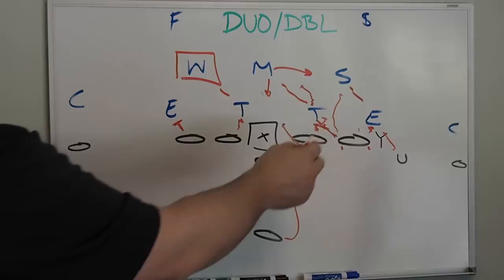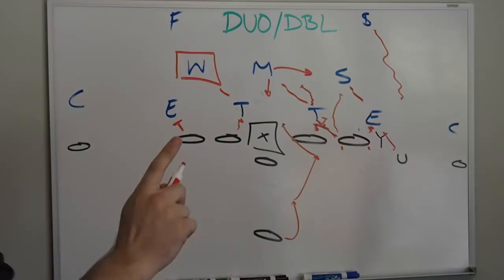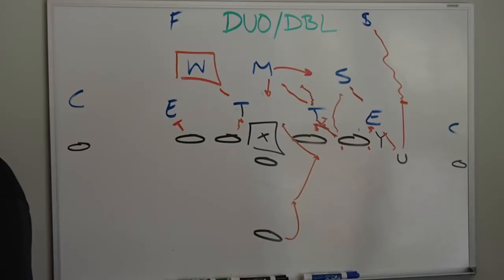Lastly on the blocking scheme, happens very often in this formation, it's eight man box. Strong safety comes in the box. On a zone play out of this formation right here, the U blocks this guy.